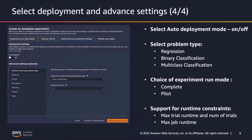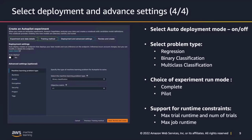Once you've selected your training method, the last screen is the deployment and advanced settings screen, where you can choose to auto deploy your machine learning models — deploying the best candidate automatically — or turn it off and deploy manually after training. In advanced settings, you can select the problem type; if you don't, Autopilot automatically detects it. Supported problem types include regression, binary classification, and multiclass classification, as well as time series classification. You can also choose to run in pilot mode, which generates only the data exploration and candidate generation notebooks, or complete mode, which runs the experiment end to end and spins up SageMaker training jobs.